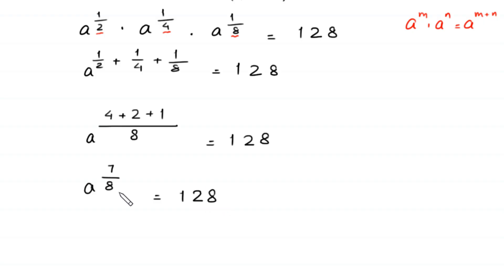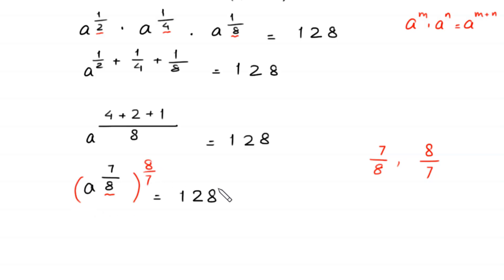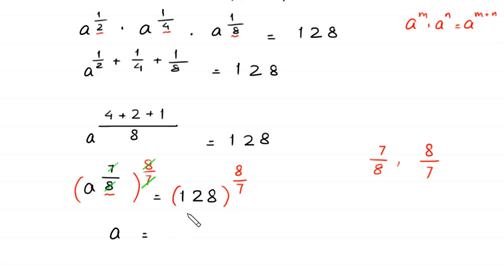Now we have a to the power 7/8. The reciprocal of 7/8 is 8/7, so we take the power 8/7 on both sides. When we multiply power 7/8 by power 8/7, the 7 cancels with 8 and the 8 cancels with 7. On the left side we are left with a is equal to 128 to the power 8/7.